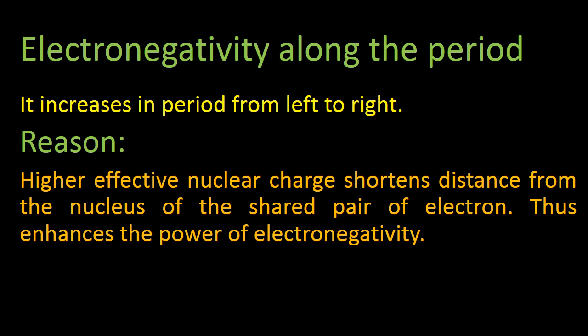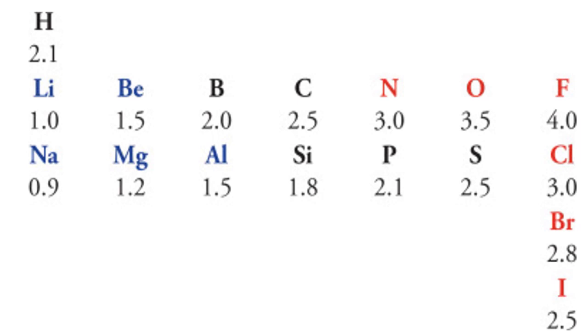Electronegativity along a period increases from left to right. The reason is higher effective nuclear charge, which shortens the distance from the nucleus to the shared pair of electrons, thus enhancing electronegativity. In period number 2, electronegativity increases from left to right — for lithium it is 1.0 and for fluorine it is 4.0. As atomic size decreases and effective nuclear charge increases, electronegativity increases. Fluorine has the highest electronegativity value in the periodic table.